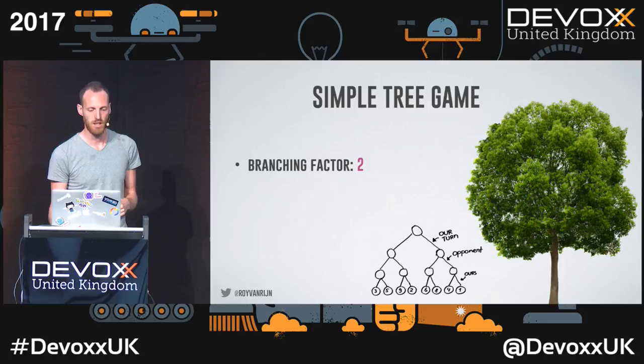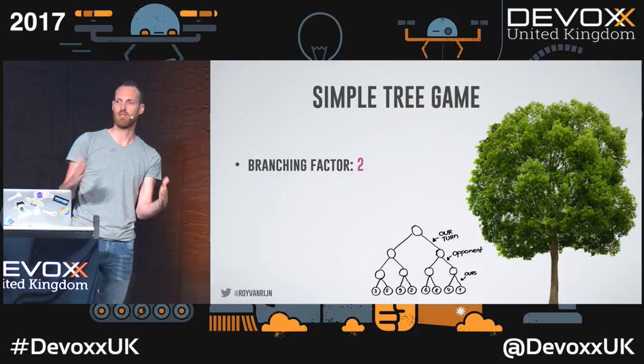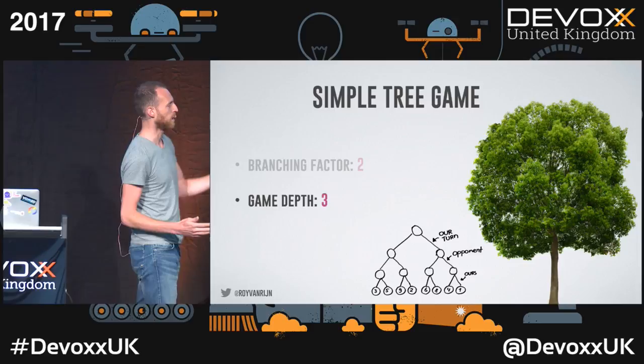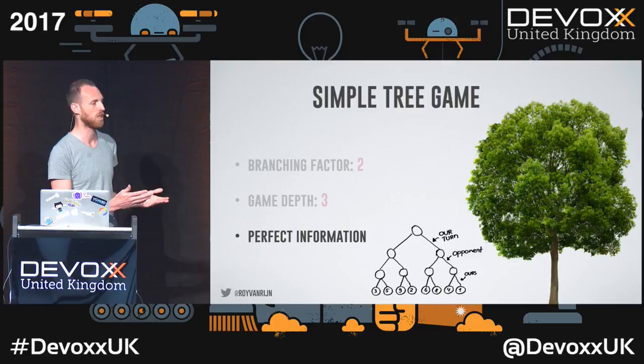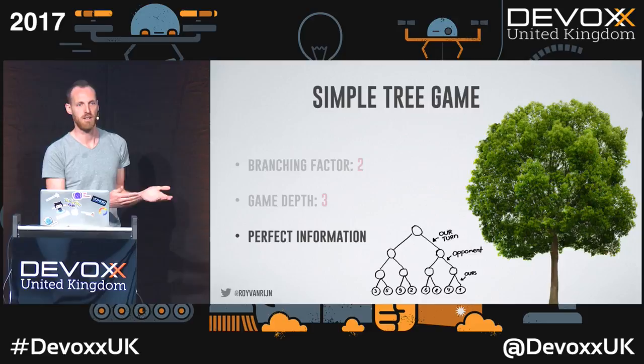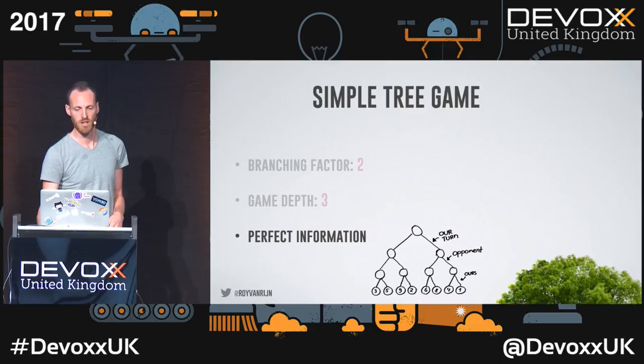Our game has a branching factor of two — at each step, we split in two. The game depth in this case was three, meaning three decision layers before the end. And we have perfect information, which means both players eventually know what you'll end up with. It's easy to see to the end and both players will know that. In such a case, Minimax works perfectly.